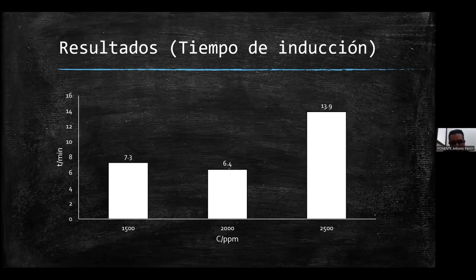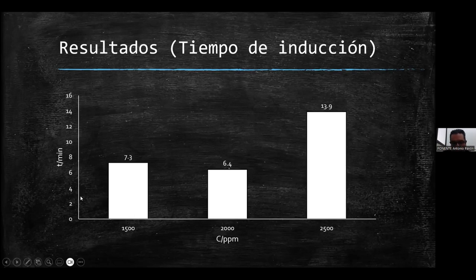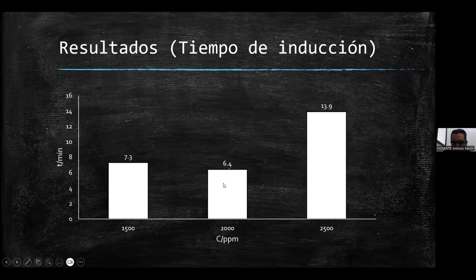Esos son los resultados. Cabe señalar que cuando se intentó formar el hidrato sin la surfactina, solo con el sistema metano-agua, no hubo formación: no hubo tiempo de inducción, ni temperatura máxima de formación, ni caída de presión. Todos estos resultados representan mejoras a la formación, lo que quiere decir que la surfactina se trata de un promotor de formación de hidrato de metano.